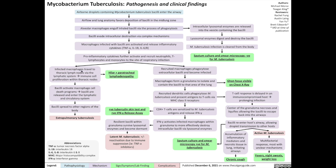The infected macrophages can travel to the thoracic lymph nodes via the lymphatic system, which results in immune cell proliferation within thoracic lymph nodes. This results in hilar and paratracheal lymphadenopathy, which is seen on chest x-ray or CT chest. The tuberculosis bacilli can activate macrophage cell death programs.